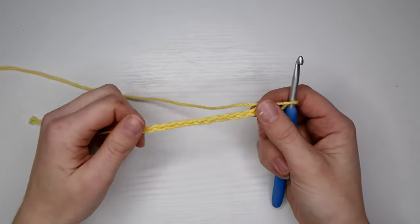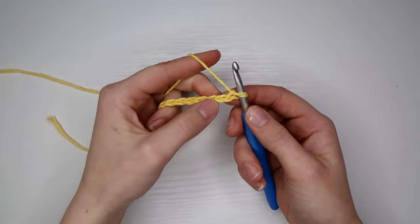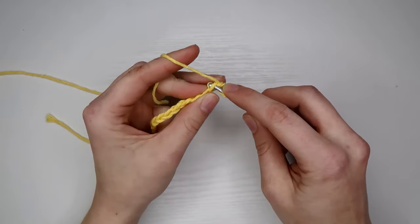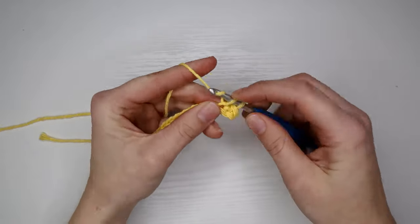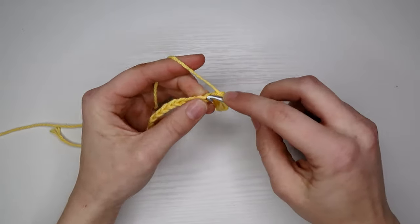Once we have our base chain, we're going to place a single crochet in the second chain from the hook. We're just going to keep placing single crochets all the way down our chain until we get to that last link.